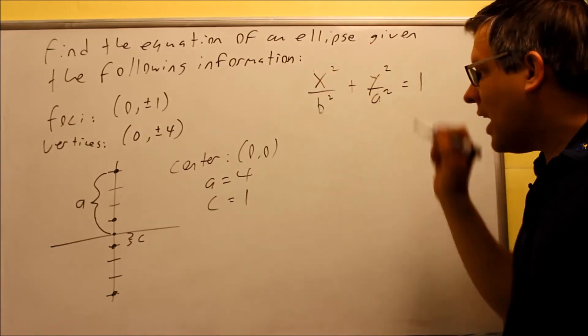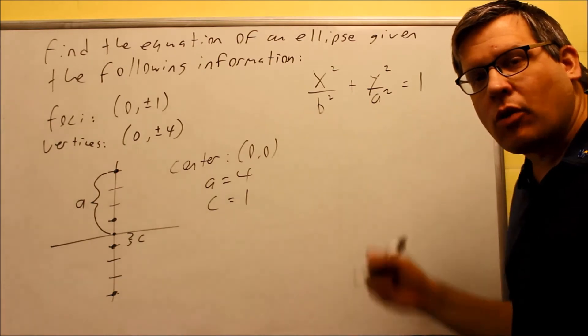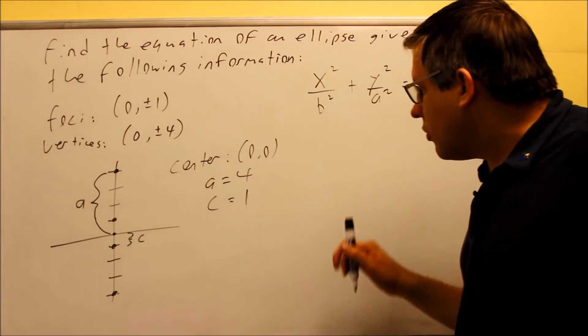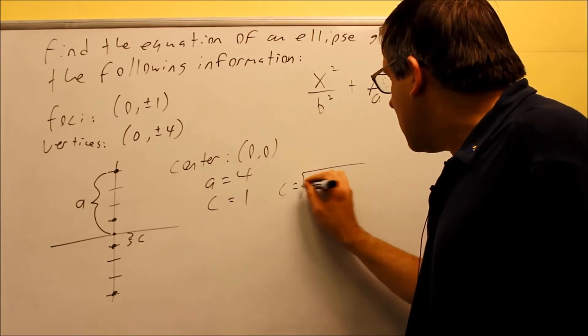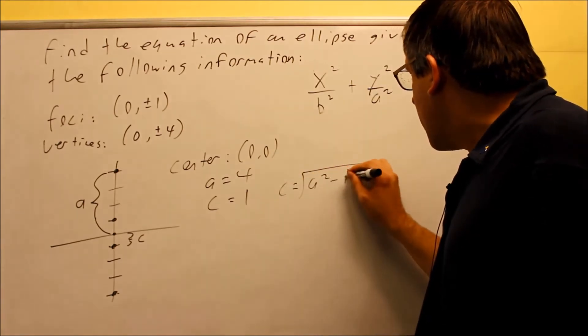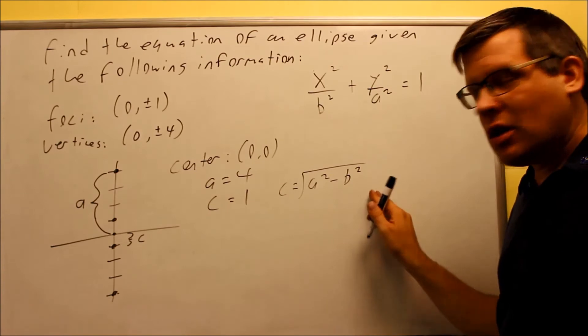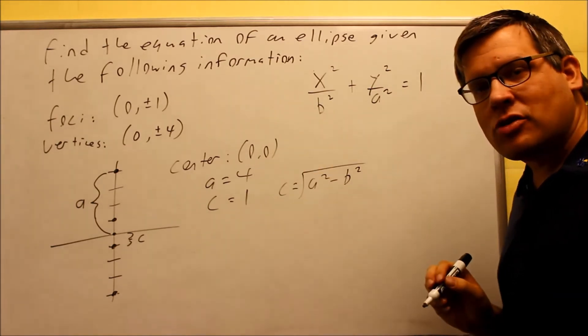Now I have the a value, but I don't have the b squared value. I want to find that. So in order to do that, I want to use the formula that we talked about before. c is equal to square root of a squared minus b squared. I'm going to start with this and I'm going to fill in the information that's provided.